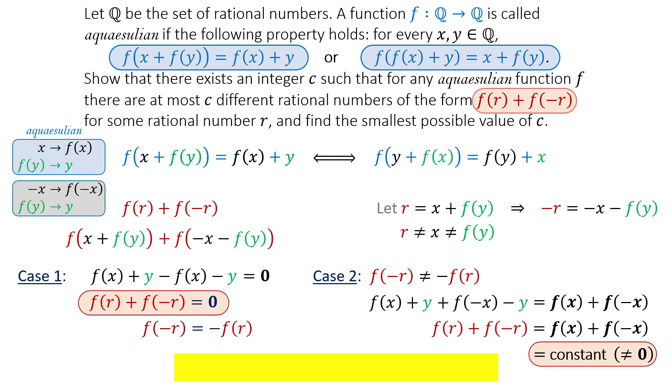So the function has two possible solutions. The smallest value of c, the number of distinct values for the given expression, is two.